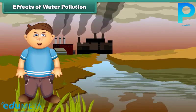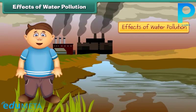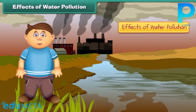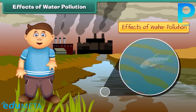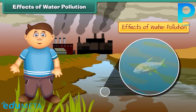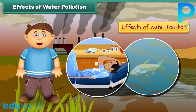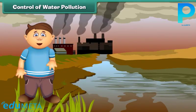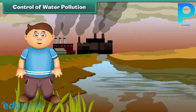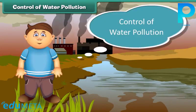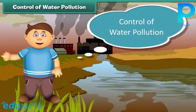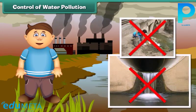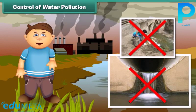What are the effects of water pollution? Poisonous chemicals released from factories and industries enter water bodies, due to which marine life is getting affected. If we consume such fish, we will also fall ill. To control water pollution, we should not dispose of garbage and harmful chemicals directly into ponds, lakes, and rivers.